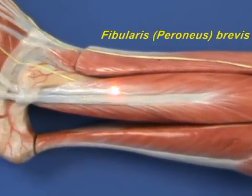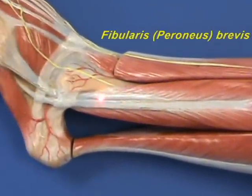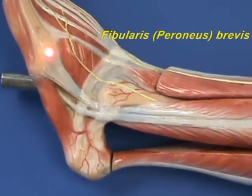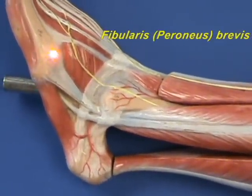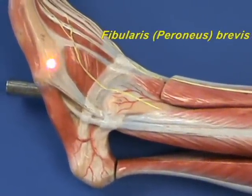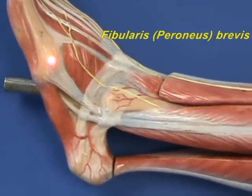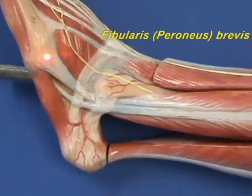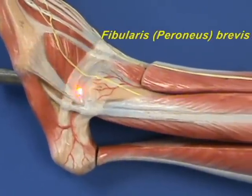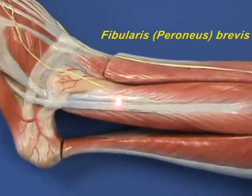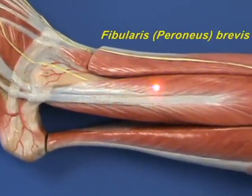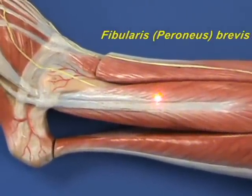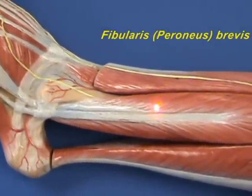The fibularis brevis inserts by way of this tendon onto the base of metatarsal one, and everts the foot at the ankle joint.